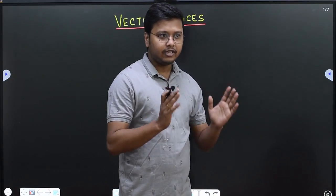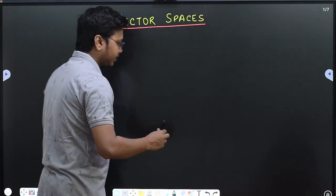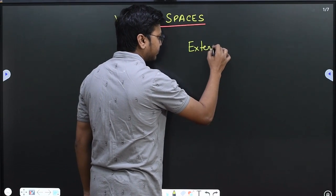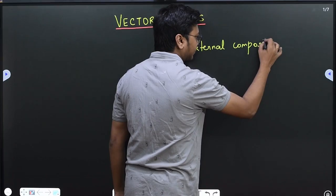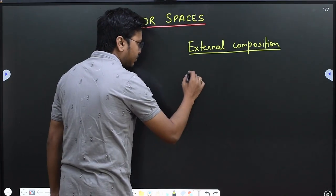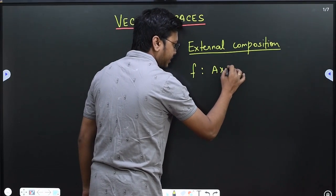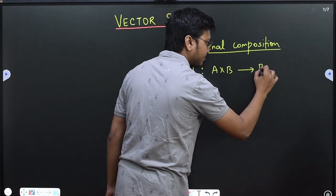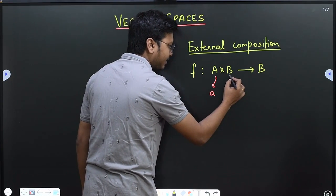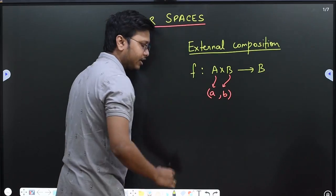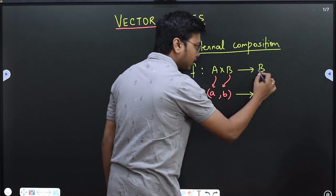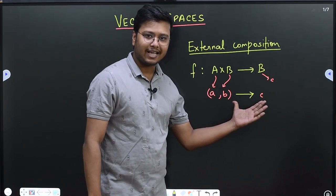Before we start with vector spaces, we need to talk about two kinds of mappings. The first one is external composition. Suppose I have a function taking me from the set A cross B to the set B again. That means if I take an element small a from A and an element small b from B, the cartesian pair (a, b) gets mapped to some element small c of the set B. This kind of composition is called external composition.